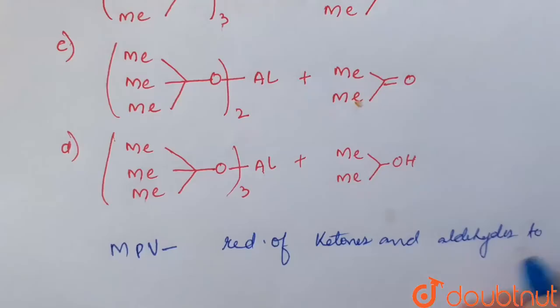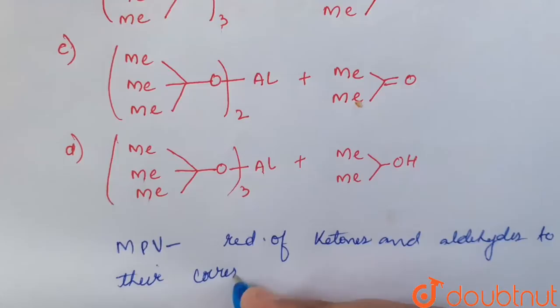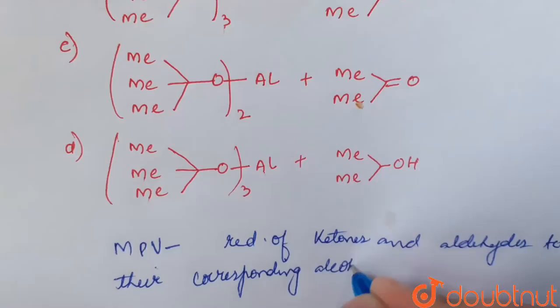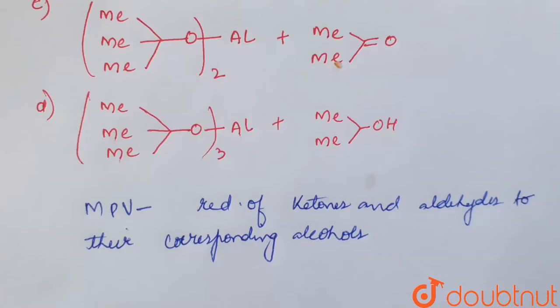To their corresponding alcohols. So MPV reactions are reduction of aldehyde and ketones to their corresponding alcohol. It involves the use of catalyst and solvent.